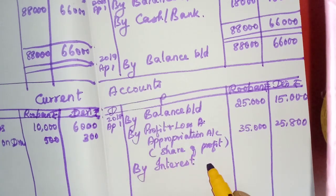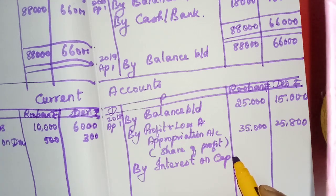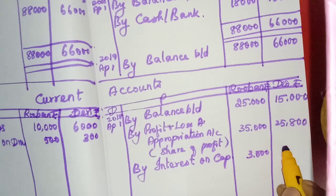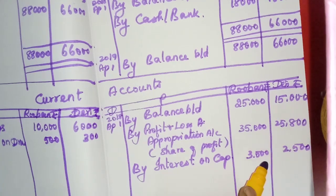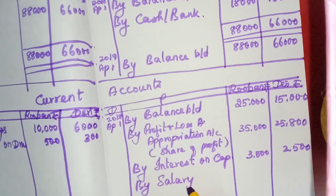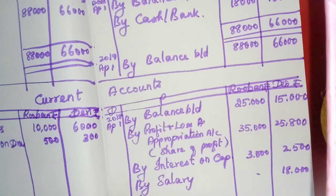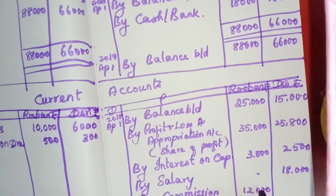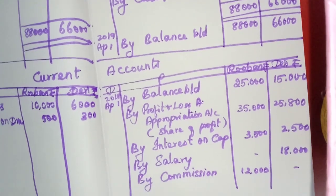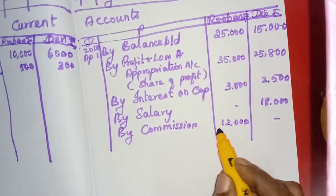Debit side has drawings and interest on drawings alone. Next, salary — by salary. Salary is given to only one partner: for Ruben 18,000, for Gary nothing. Then commission — by commission. Commission only for Ruben: 12,000; for Gary, nil. That's all the items we have entered. Now we should add and find out the difference — the balance.